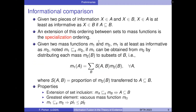Mass functions are generalized sets. In terms of informative content, if I have two pieces of information — X belongs to A and X belongs to B — then X belongs to A is more informative than X belongs to B if A is contained in B. This ordering between sets can be extended to mass functions using the specialization ordering. Given two mass functions M1 and M2, M1 is at least as informative as M2 if M1 can be obtained from M2 by distributing each mass M2(B) to the subsets of B. It extends set inclusion, has the vacuous mass function as the greatest element, and if M1 is more informative than M2, then the plausibility function associated to M1 will be lower than that of M2.